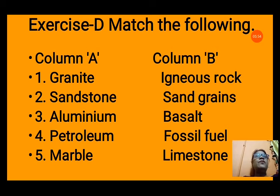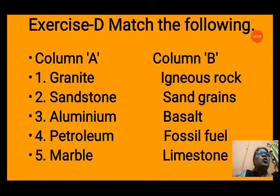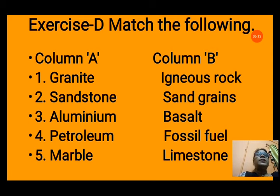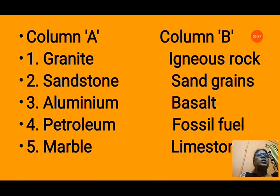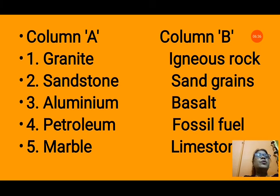Exercise E: Match the following — Column A with Column B. Granite matches with igneous rock. Sandstone, as the name suggests, consists of sand grains cemented and hardened together, so it matches with sedimentary rock. Aluminium comes from basalt rock. Petroleum matches with fossil fuel. Marble, formed after metamorphosis of limestone, matches with limestone.